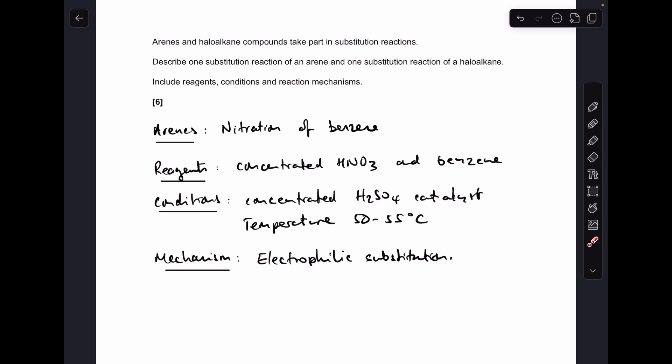Starting with the nitration of benzene, I'm literally just using the instructions in the question. It's kind of a checklist, so there's no need to write paragraphs or anything like that. The reagents I'm going to need are concentrated nitric acid and benzene. The conditions: concentrated sulfuric acid catalyst and a temperature of around 50 to 55 degrees C. The mechanism is called electrophilic substitution, and when I go into the mechanism, I'm going to be explaining why it's electrophilic.